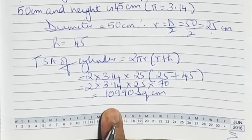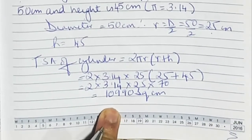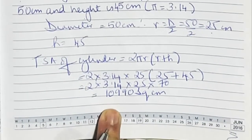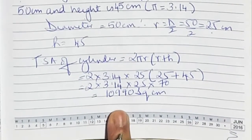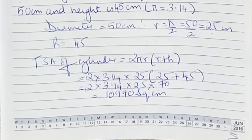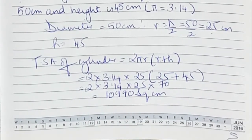So the final answer: total surface area is 10990 square centimetres.